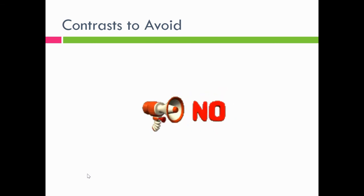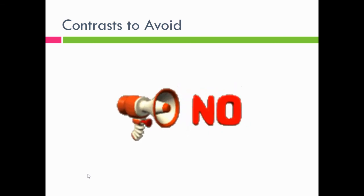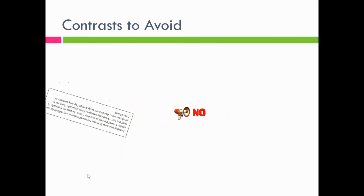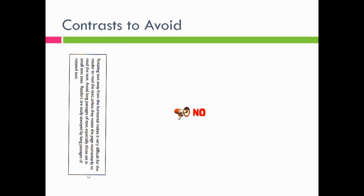Here are a couple of contrasts to avoid. Really, it's about not rotating your text — if most of your text is straight up and down, don't rotate it, because people end up turning their head and you're making them work. Don't do that. The other one is stacking text on top of each other, especially for larger amounts of information — that's really tricky for people to understand. And that is contrast in C.R.A.P.